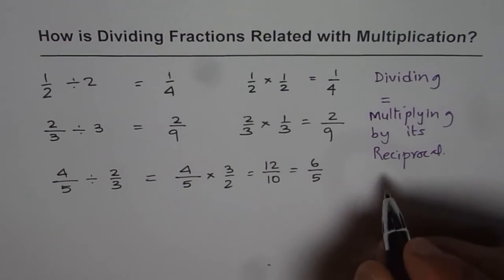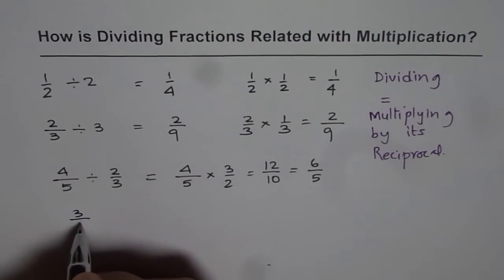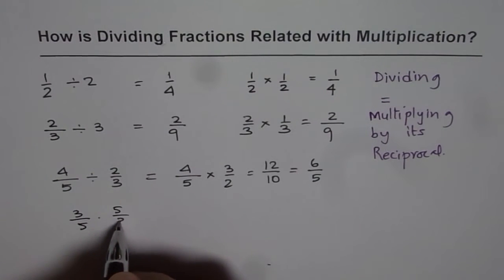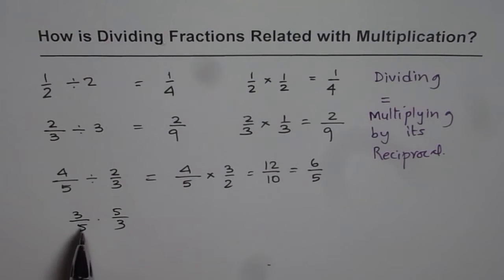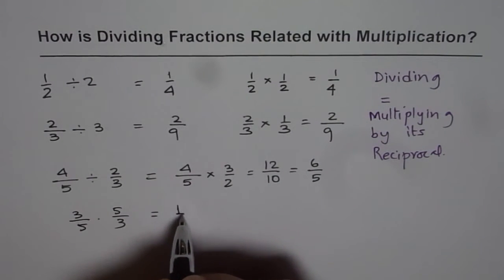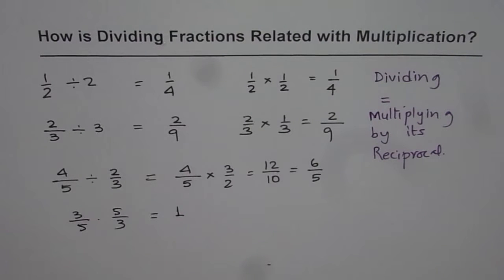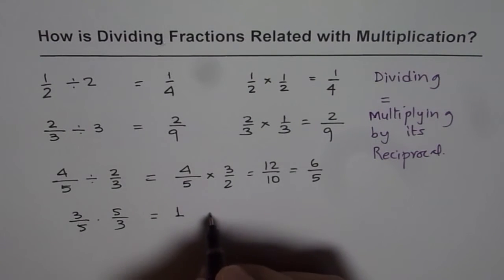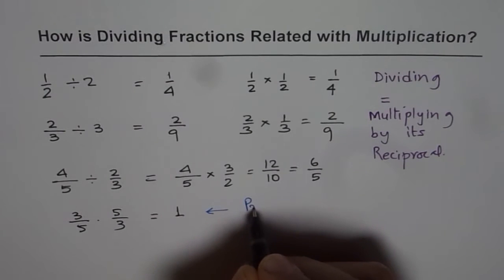Reciprocal is, let us say if I have a number 3 over 5, then reciprocal of 3 over 5 will be 5 over 3. Remember, if you multiply a number and its reciprocal, you will always get what? 1. So that is the property of reciprocal. So remember this also property of reciprocal.